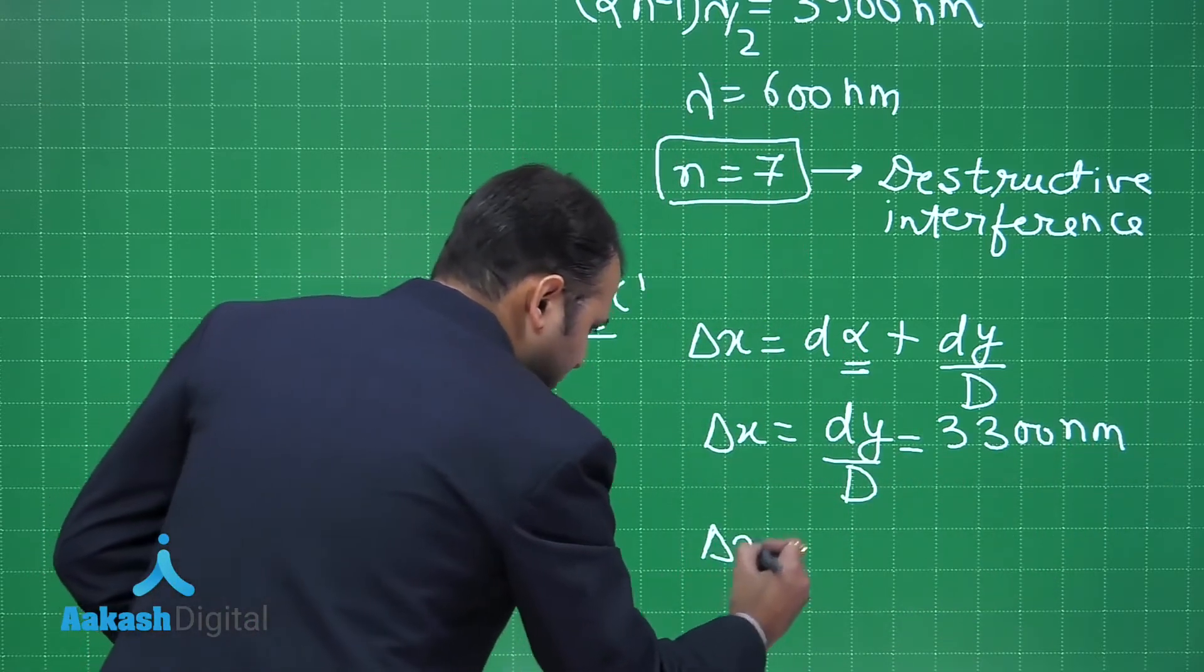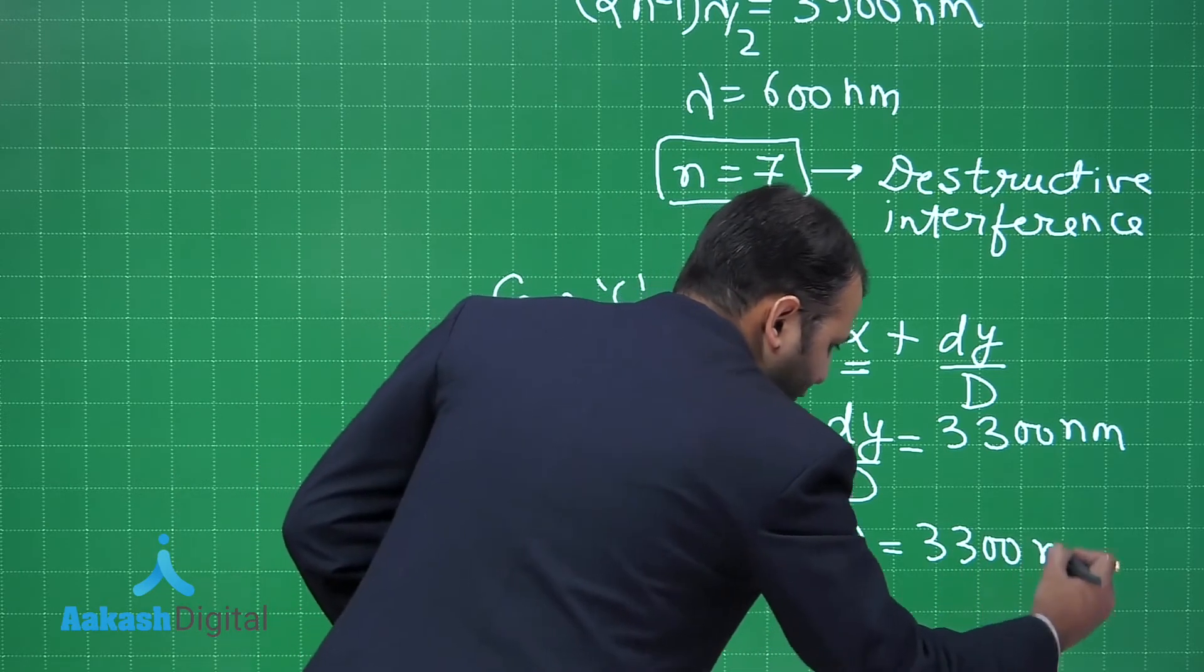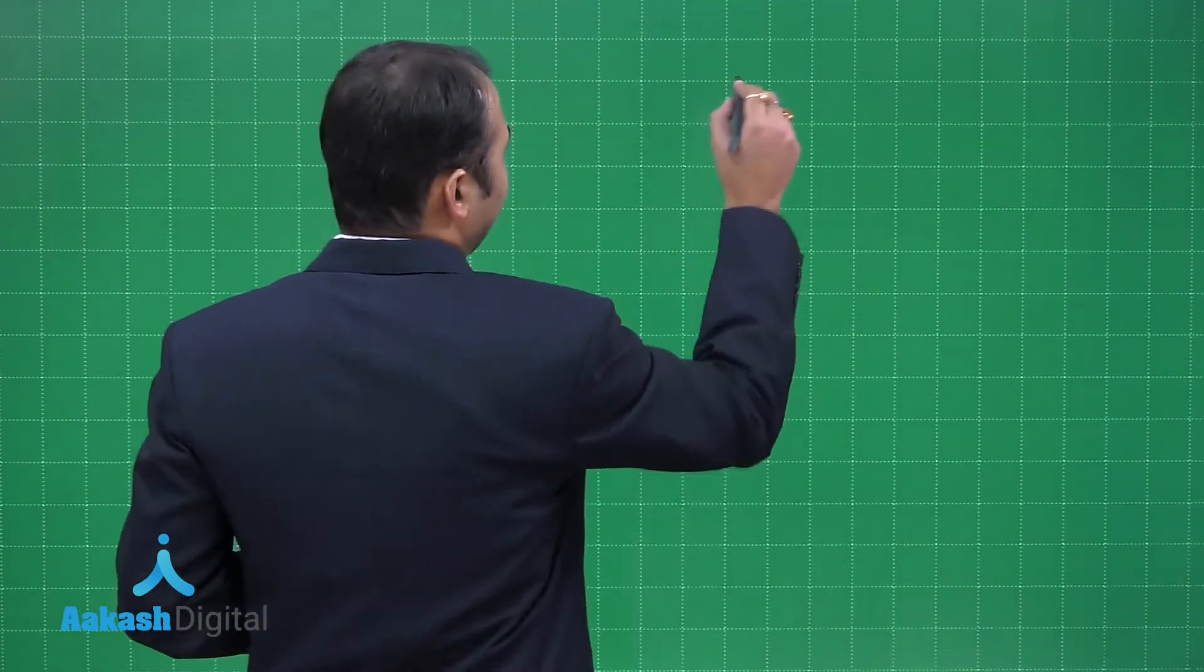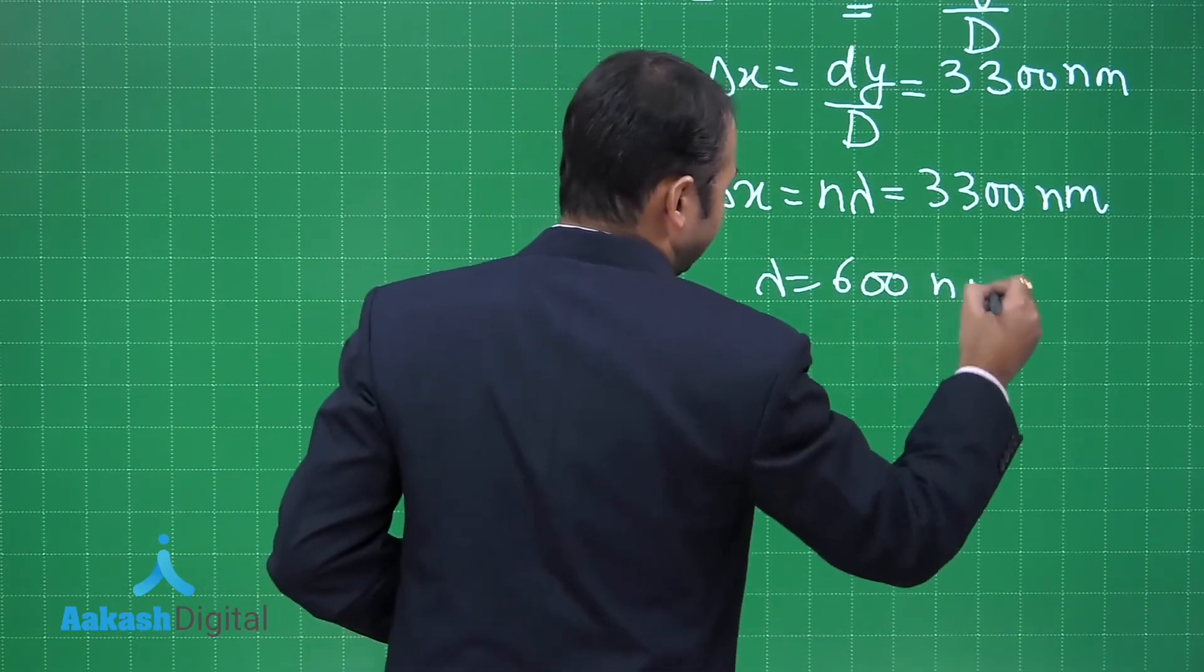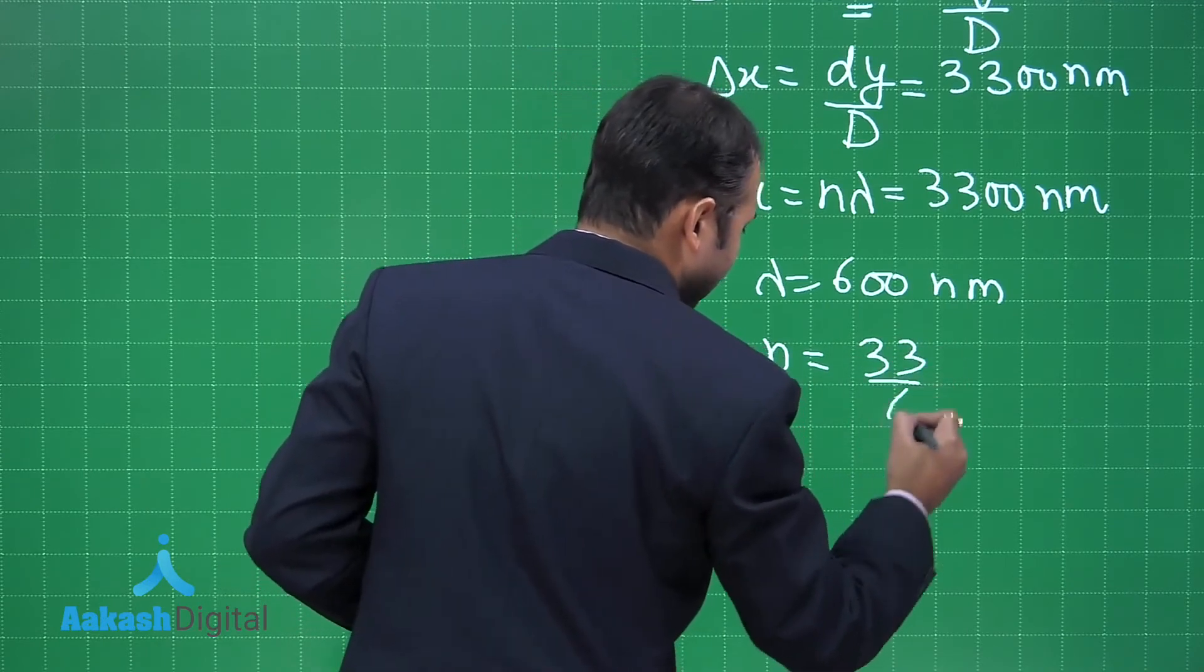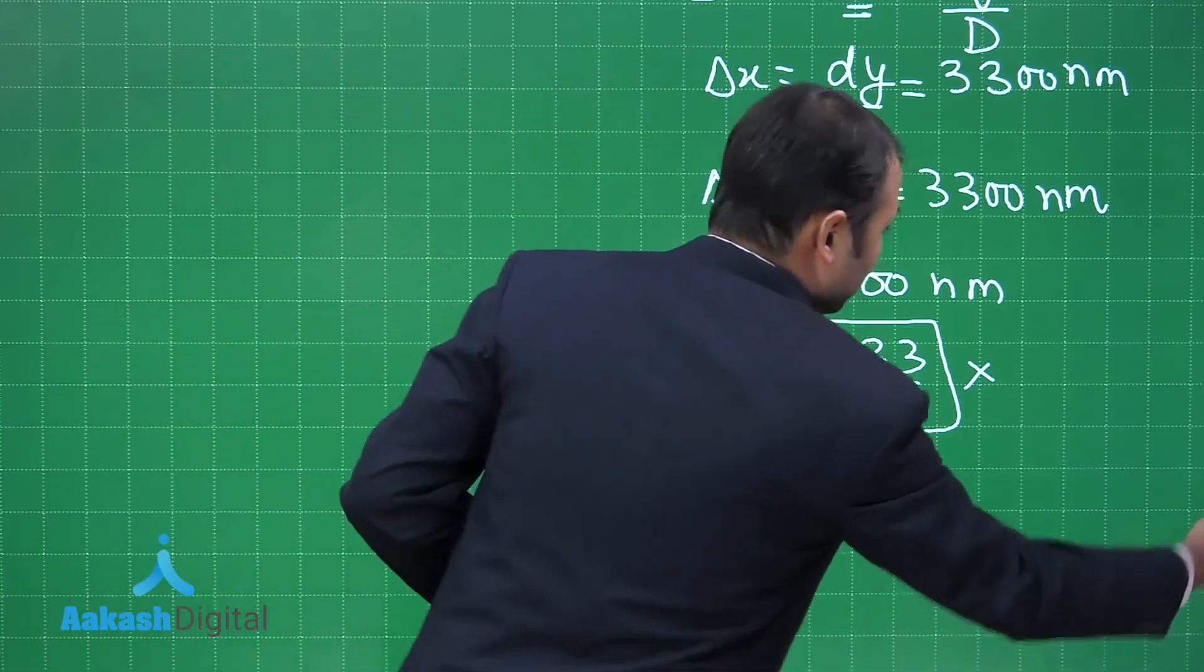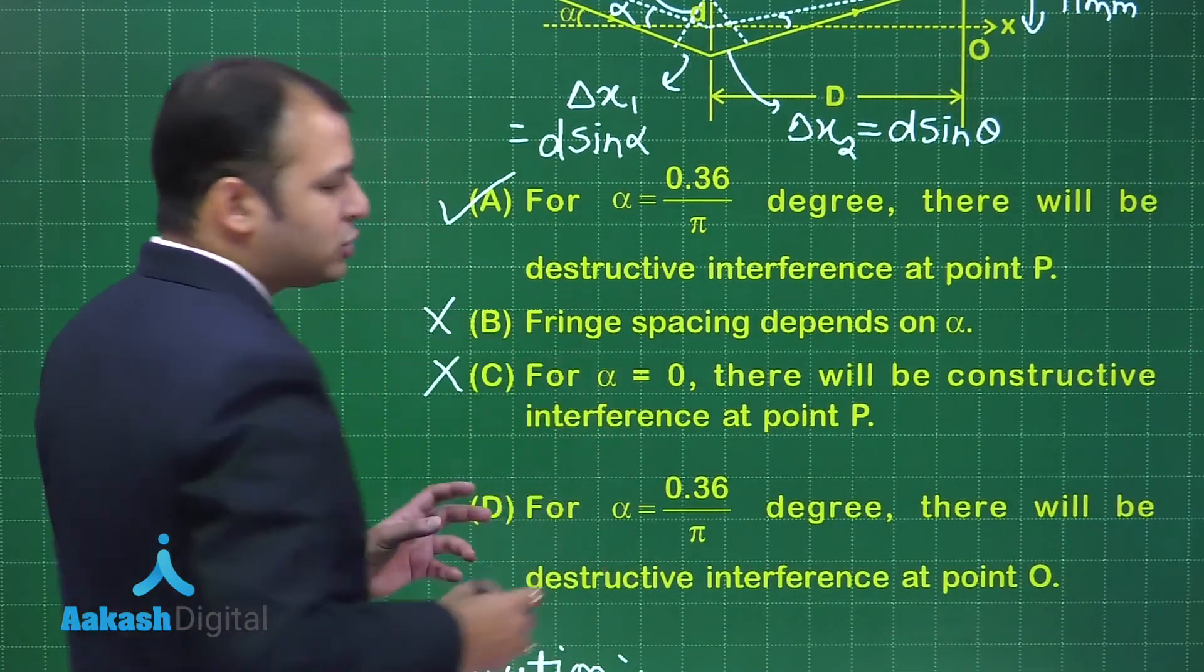For constructive interference, delta x should be equal to n lambda, that is 3300 nanometers. If constructive interference is there, n should come as a whole number. When you calculate, you will find that lambda is given as 600 nanometers. You will find n equals 33 by 6, which is not a whole number. At P, you will not find constructive interference in this case. So option C, which we were talking about, is also not possible.